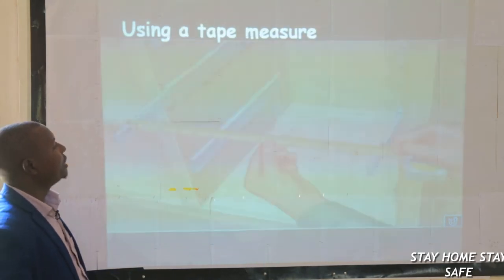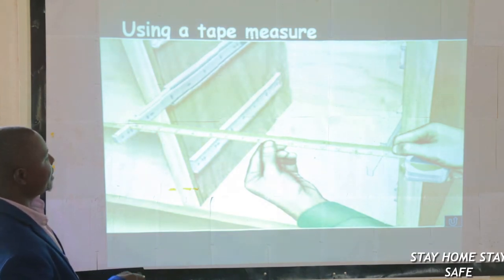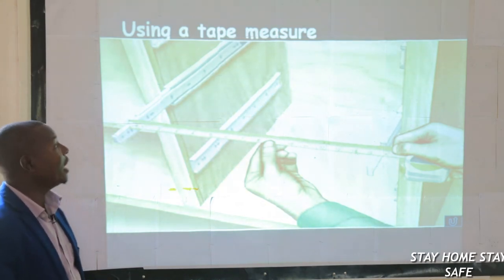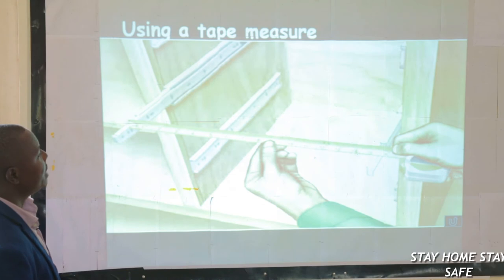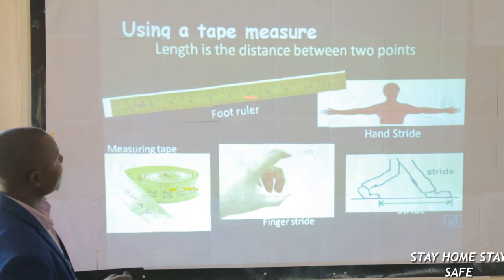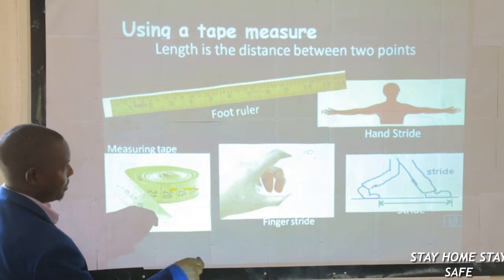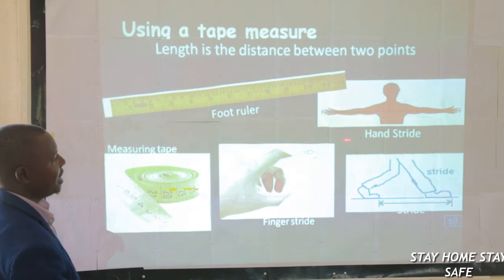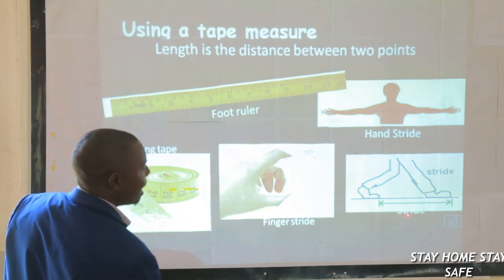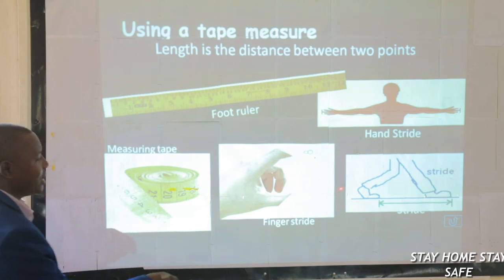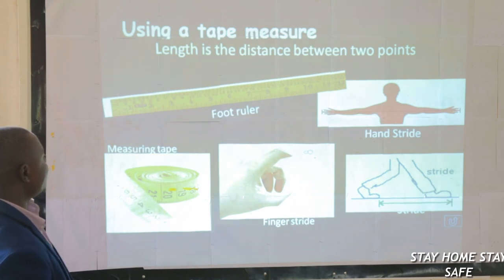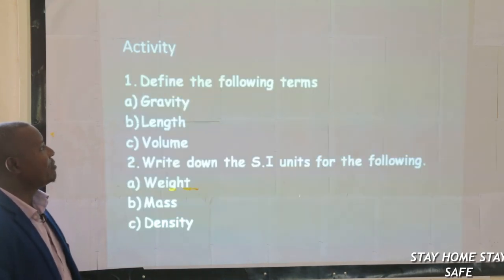Now, using a tape measure — the one this gentleman is holding is called a tape measure. We can use a tape measure to measure length. Here they are also showing us a foot ruler. Then hand strides, foot strides — those are the strides we were talking about. Finger strides are what we call hand spans. Then we have the measuring tape.